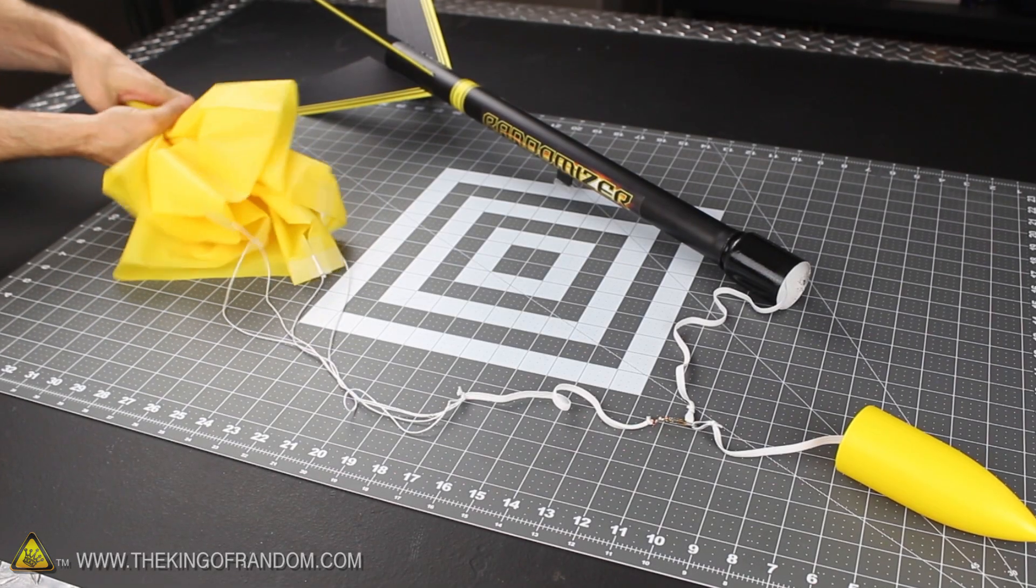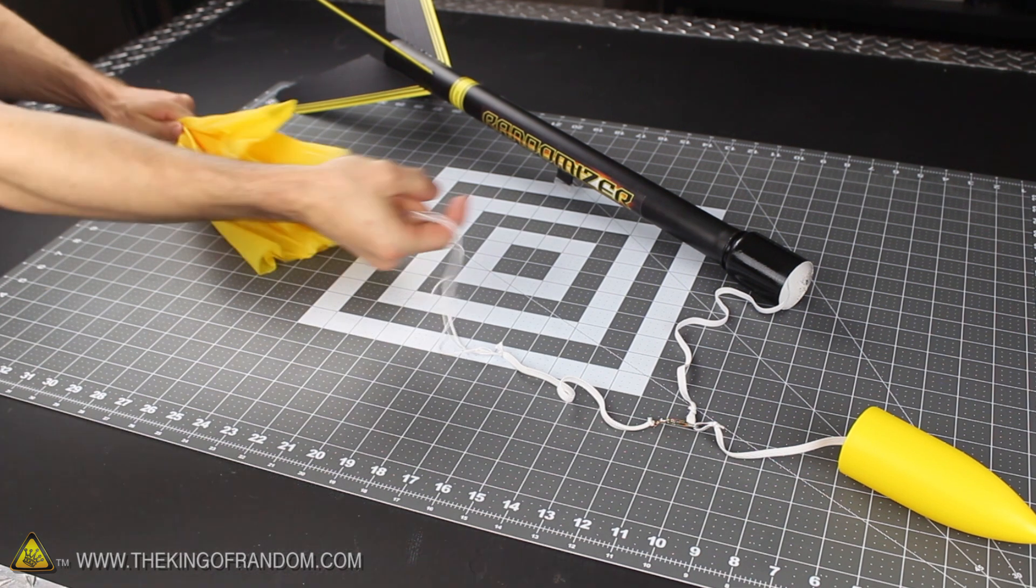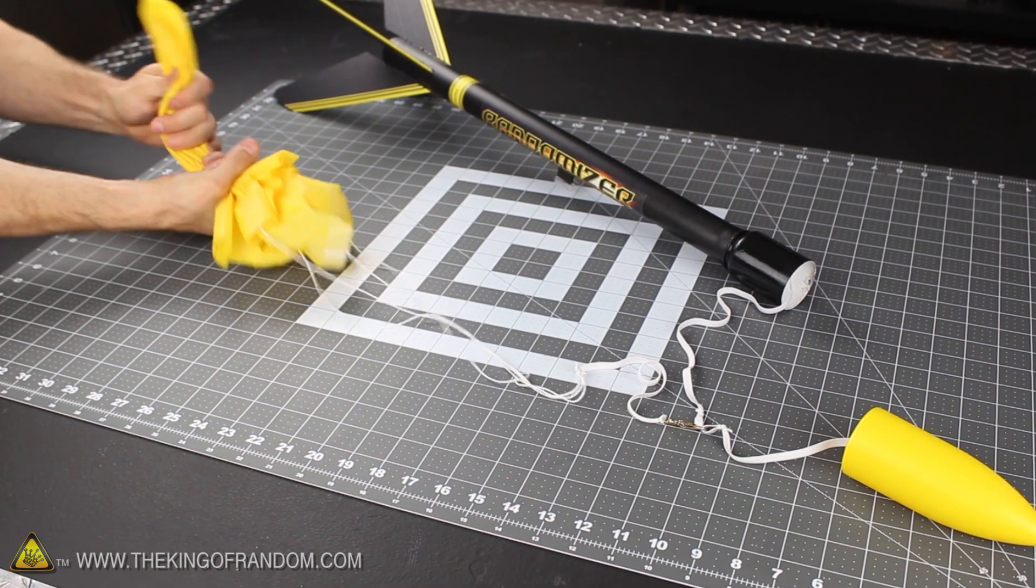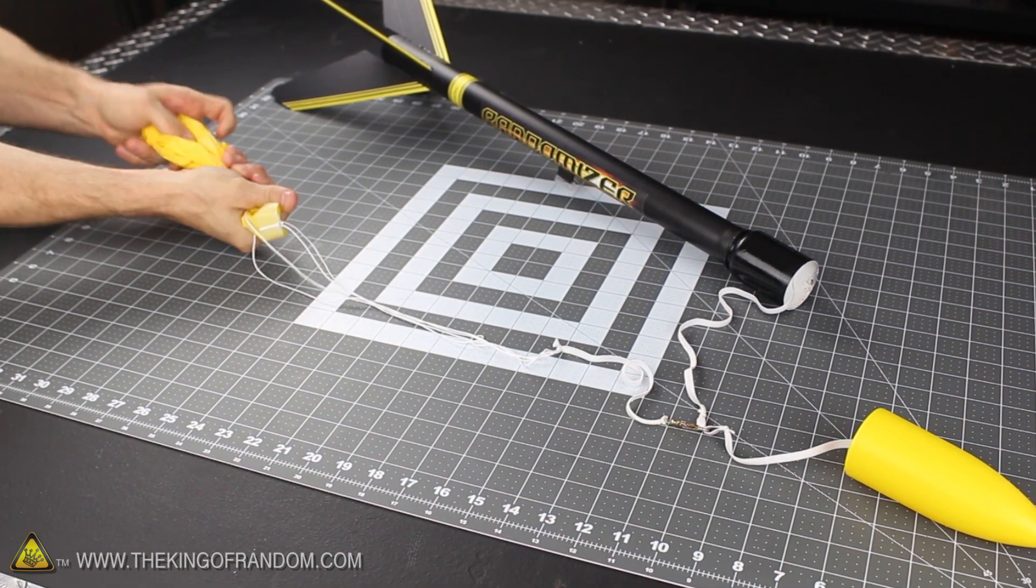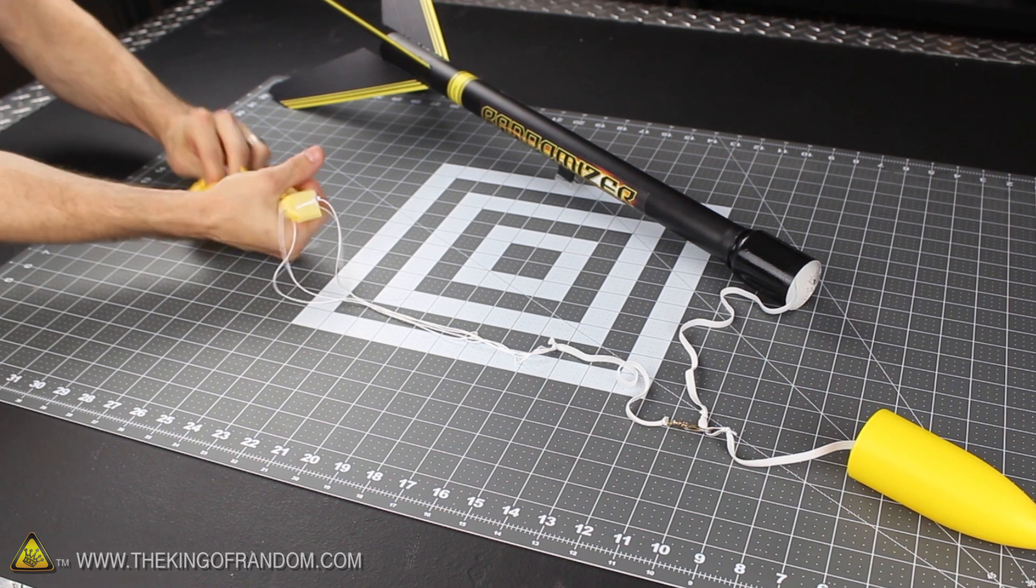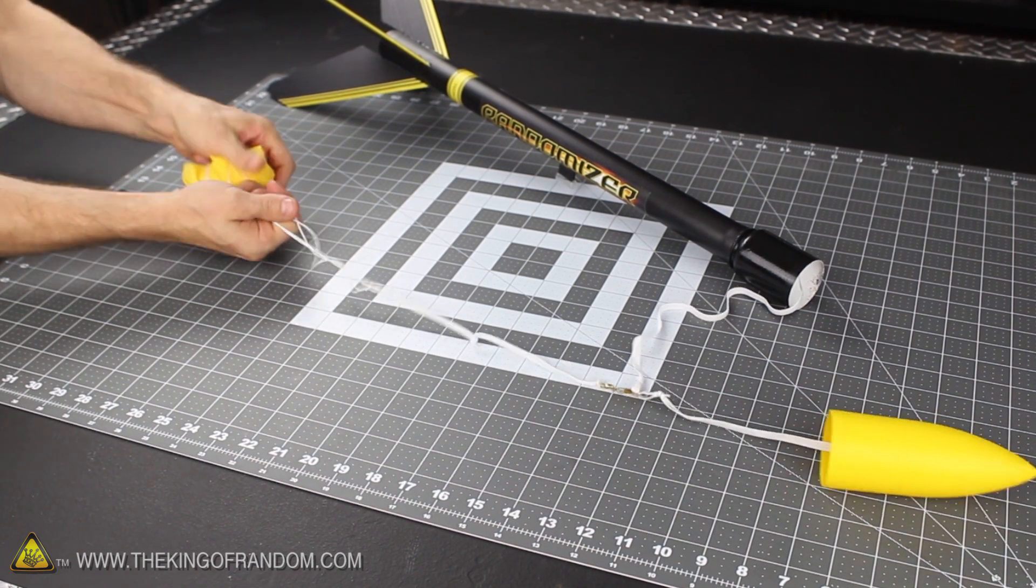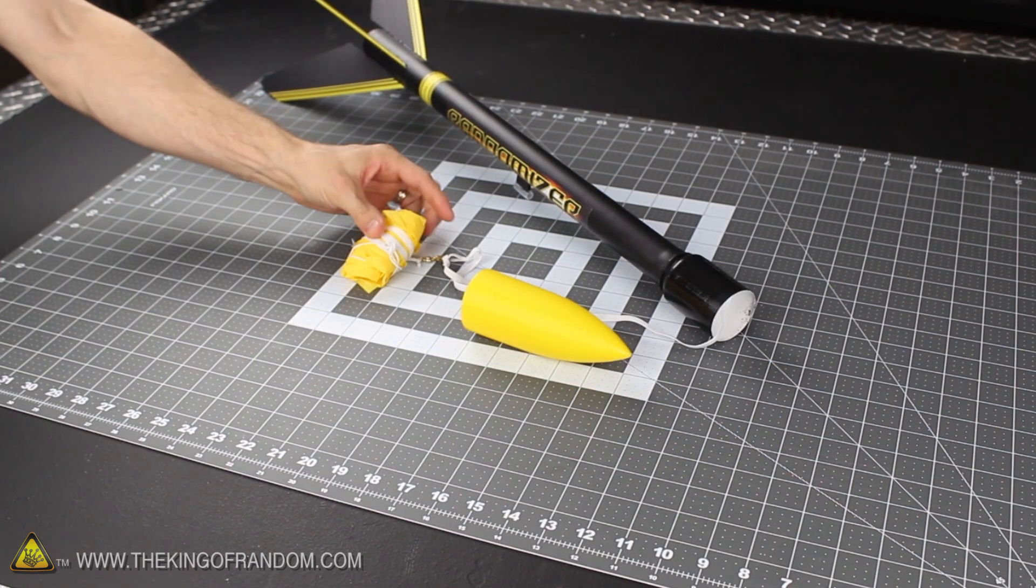Now packing your parachute is as simple as holding it in the center, then squeezing it all together and rolling it up. You might want to fold the material in half and give it another squeeze to get rid of any air, but essentially all you need to do is roll it up and wrap the strings around the outside, which will help hold the bundle together until it deploys.